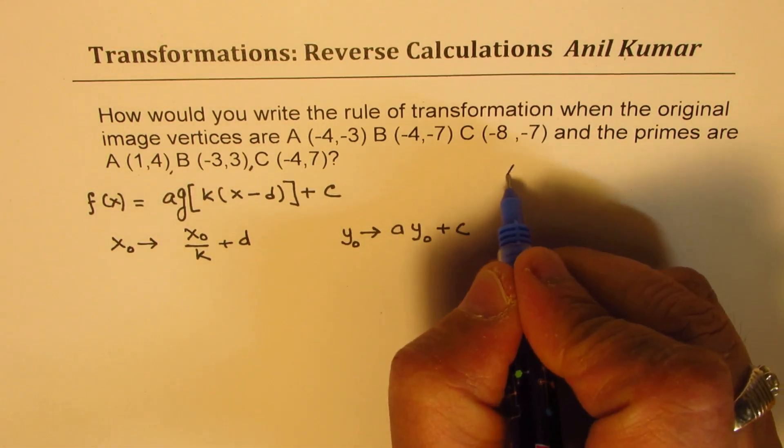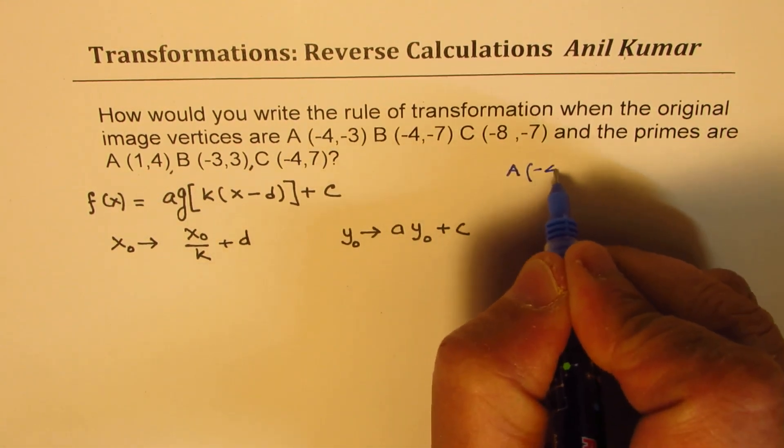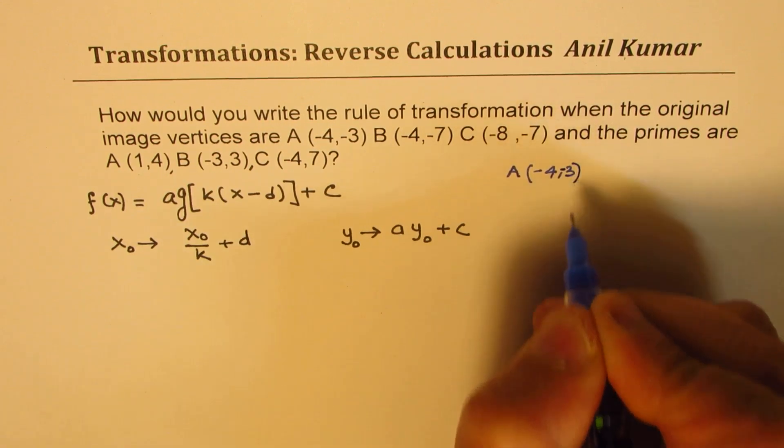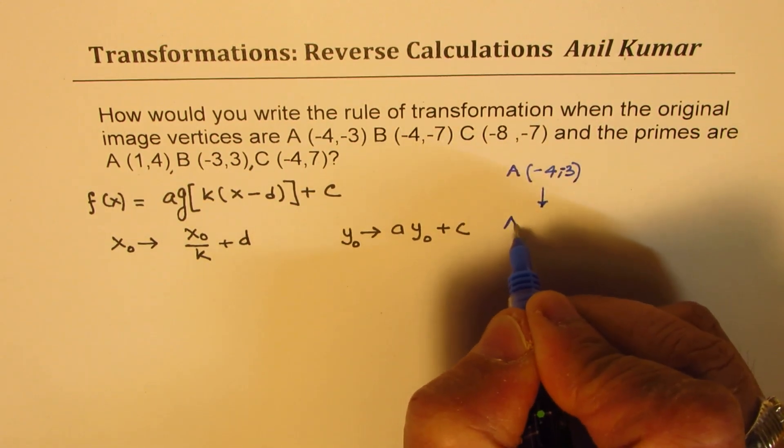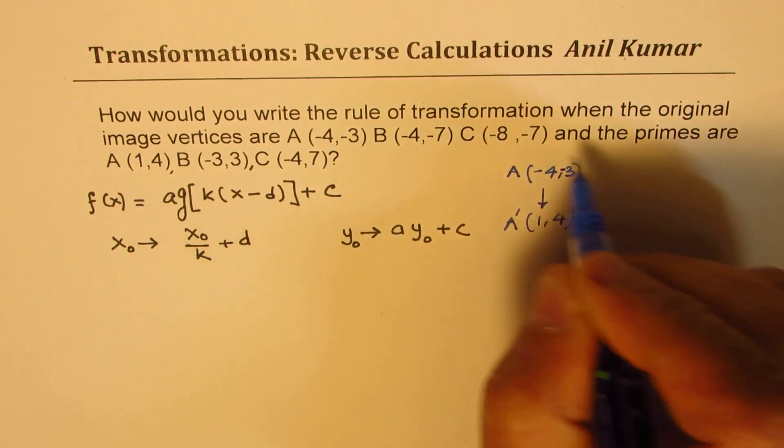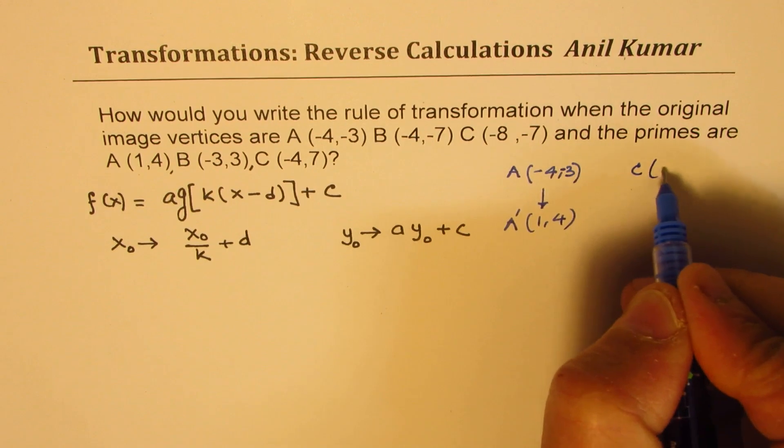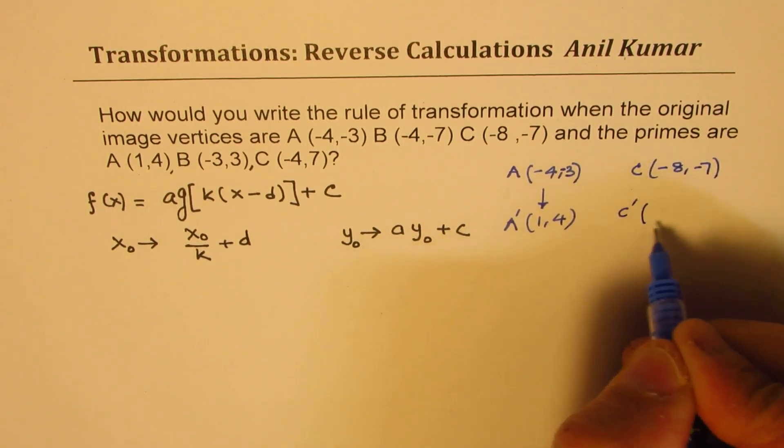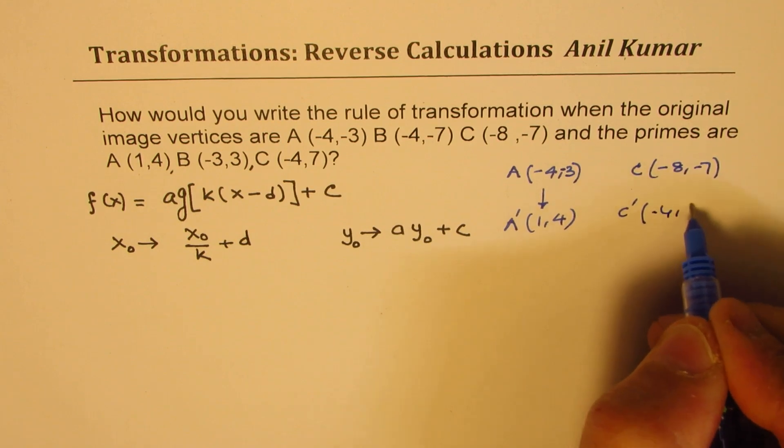So let's use point A, which is (-4, -3), which changes to A', which is (1, 4). And let's use C, which is (-8, -7), and C' the image is (-4, 7).